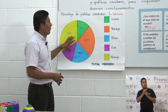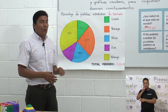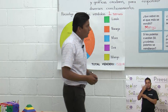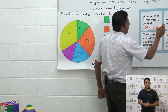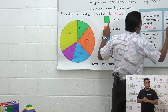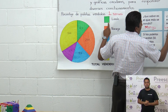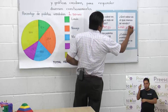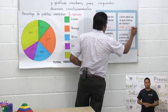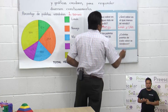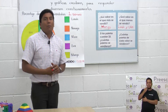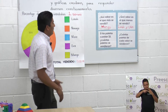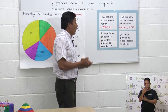Estamos corroborando que las paletas que menos se vendieron son las de limón y las de uva. Vamos a contestar la pregunta: ¿qué sabor es el que menos se vendió? Limón y uva, ambos son los sabores que menos se vendieron. Vamos a la siguiente pregunta: si las paletas cuestan $5 pesos, ¿cuántas paletas se vendieron?